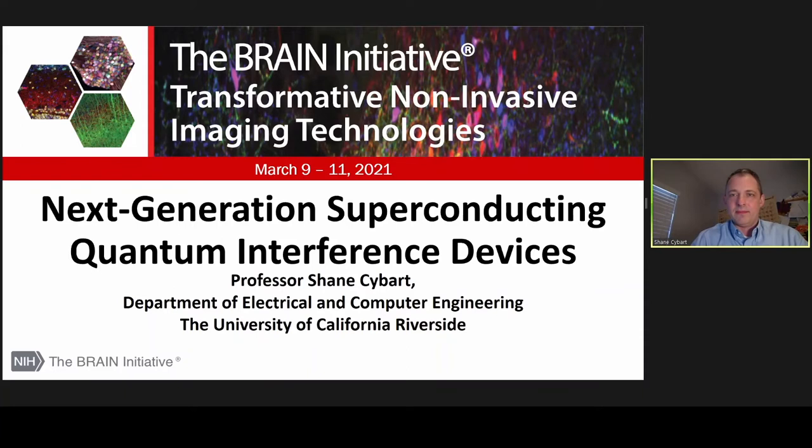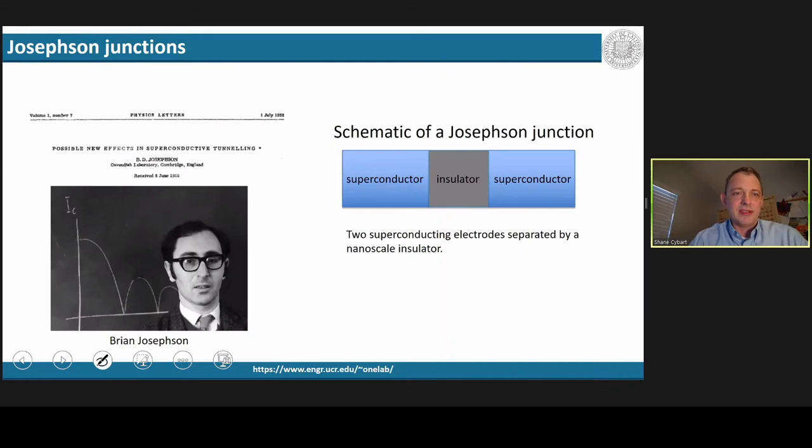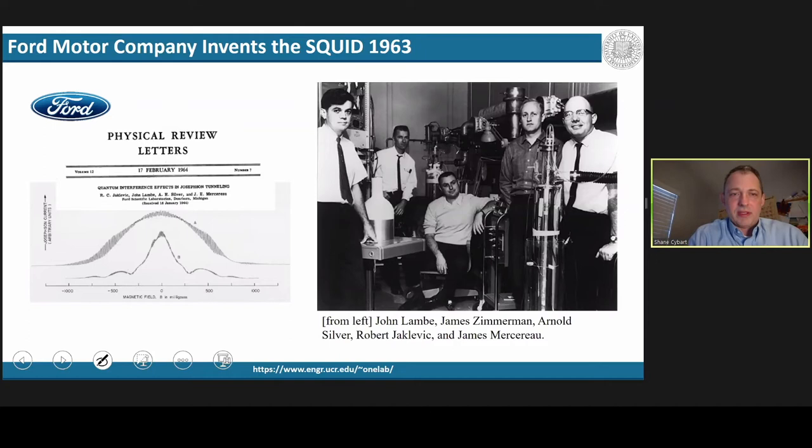I'd like to get started with a little bit of history and background of superconducting devices. The beginning started with a groundbreaking paper by Brian Josephson from the Cavendish Lab in Cambridge, who predicted that superconducting electrons could tunnel through thin insulators when sandwiched between two superconducting electrodes. Ford Motor Company used this technology to develop the SQUID, a quantum interference device where currents in different junctions can interfere with one another at high resolution with sensitivity to magnetic field.